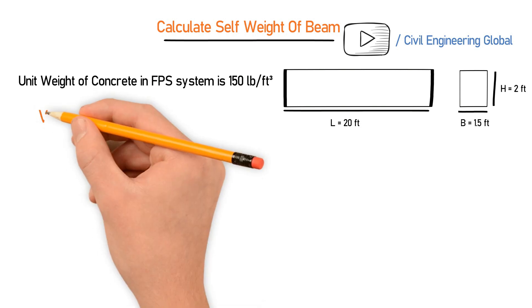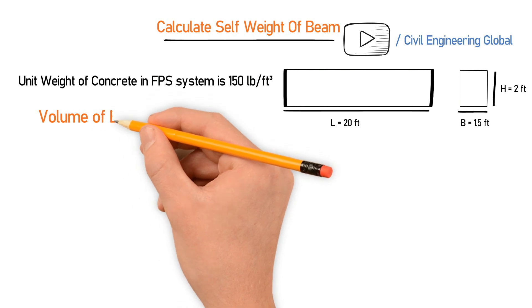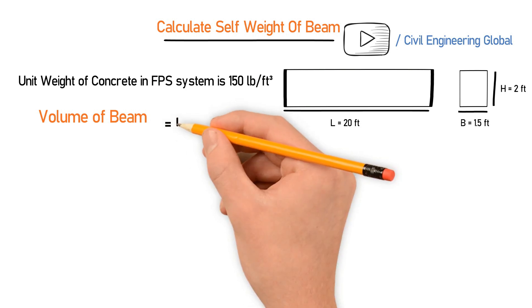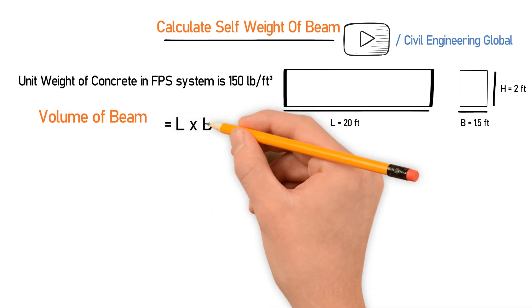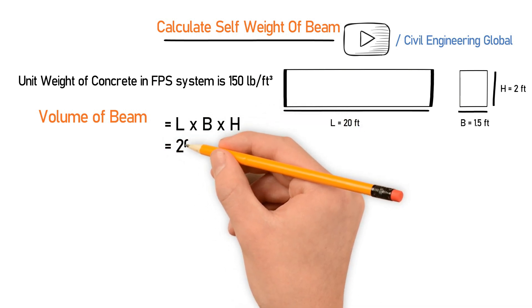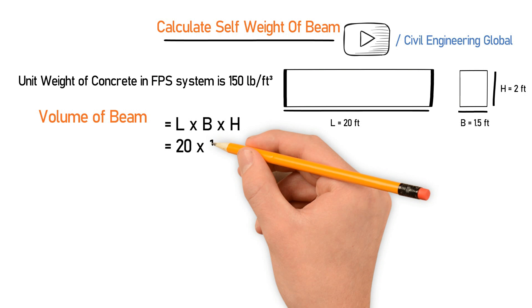Let's find out the volume of the beam. For the volume, we have the formula which is length multiplied by breadth multiplied by height. So length is 20 multiplied by breadth which is 1.5,